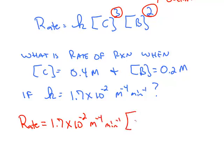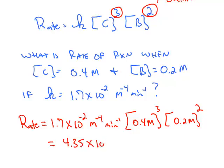And then we have the molarity of chemical C to the third, and the molarity of chemical B to the second. If you multiply this out, the rate is 4.35 times 10 to the negative fifth. And if you keep track of all of the units, the units will be molarity per minute, or molarity times minutes to the negative one power.